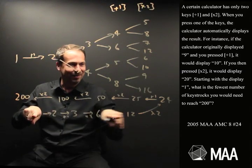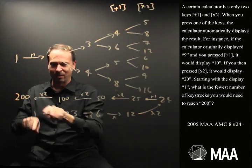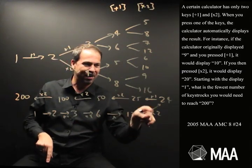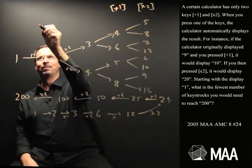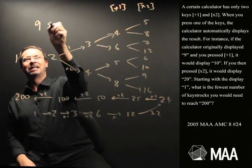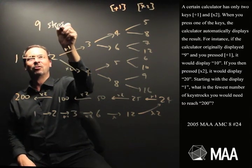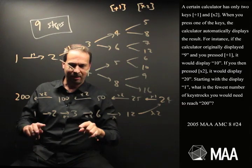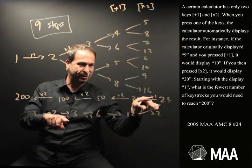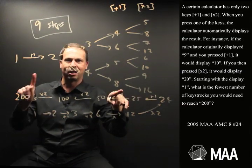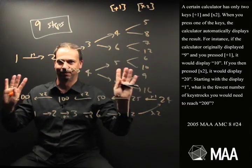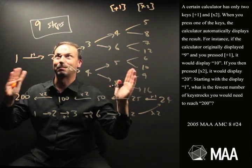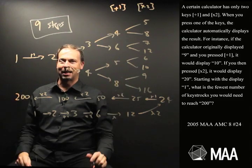Okay, here is a path that gets me to 200 in 1, 2, 3, 4, 5, 6, 7, 8, 9 steps. I can definitely get to 200 in 9 steps — I've used some plus 1s and lots of times 2s. That's a first guess. Maybe the answer is 9 steps.